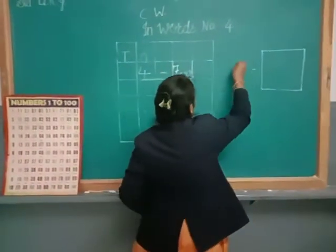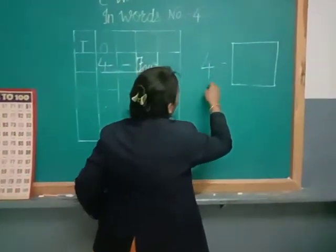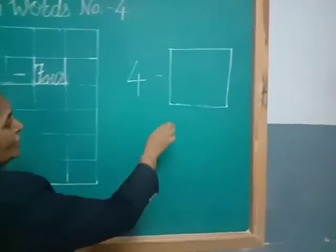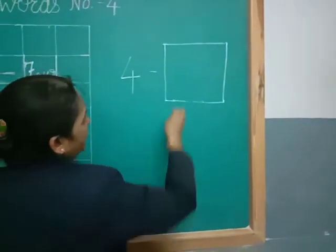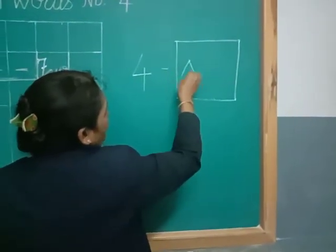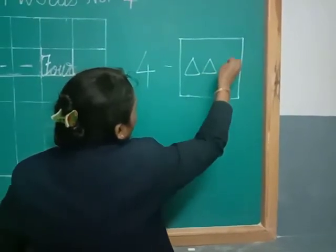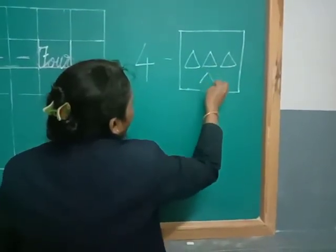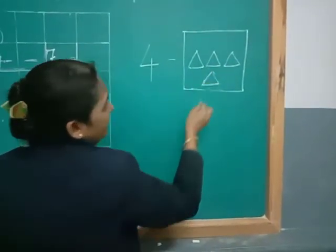Number 4. Then, now number 4 right here and draw the picture which you like. Look here. 1, 2, 3 and 4. How many triangles are there?